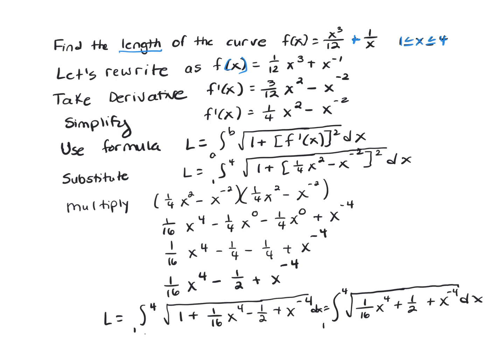Take the derivative. f′(x) equals (3/12)x² minus x⁻², which simplifies to f′(x) equals (1/4)x² minus x⁻².